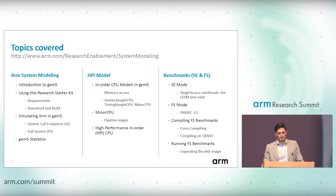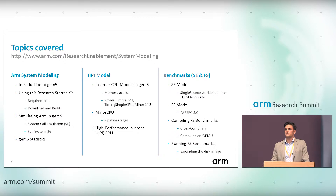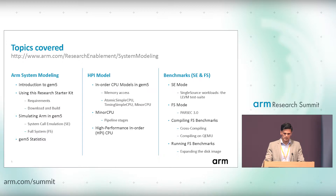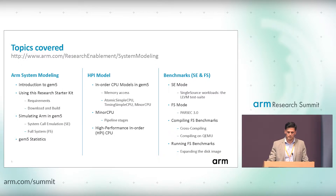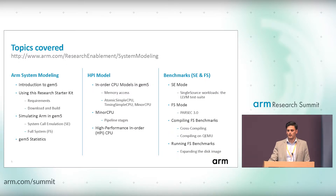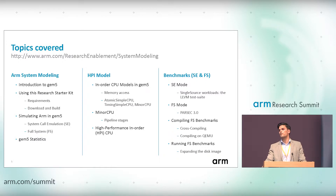In our starter kit we also provide something unique for professional users: a high-performance in-order CPU model. This is the first time ARM is releasing an ARMv8-A based processor timing model, and this could be very interesting to professional users. It's an in-order CPU model in gem5. We cover memory accesses and different memory access types. We focus on the atomic CPU, the timing CPU model, and the Minor CPU. Based on the Minor CPU, we developed the HPI model, which uses the Minor CPU base and adds timing information to be a good representative of an ARMv8-A architecture.